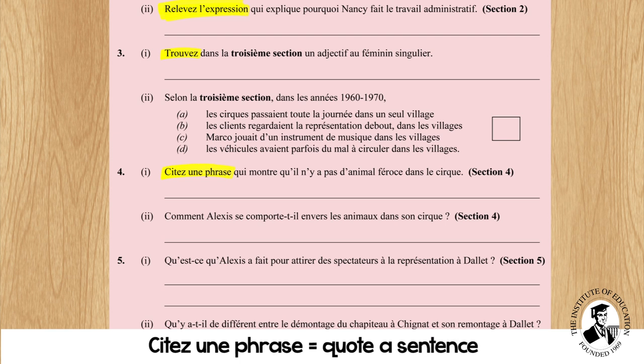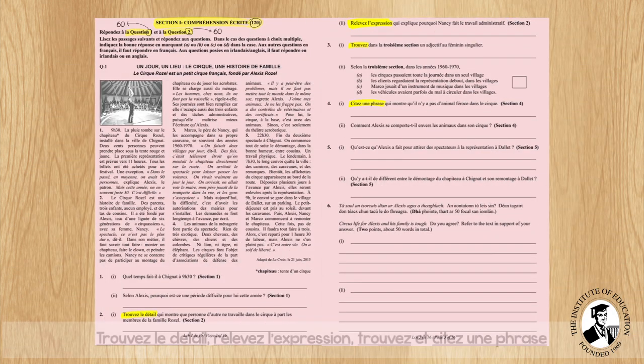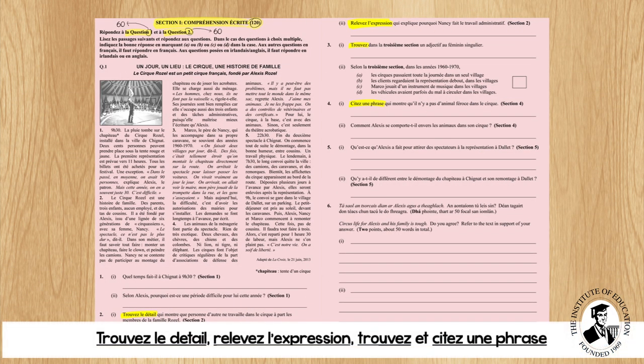We keep going. Comment Alexis se comporte-t-il? — How is he behaving? Qu'est-ce qu'Alexis a fait? — What did Alexis do? And qui a-t-il de différent? — What is the difference between, etc. So all in all, as you are looking, you have highlighted the four questions that are telling you to use your text.